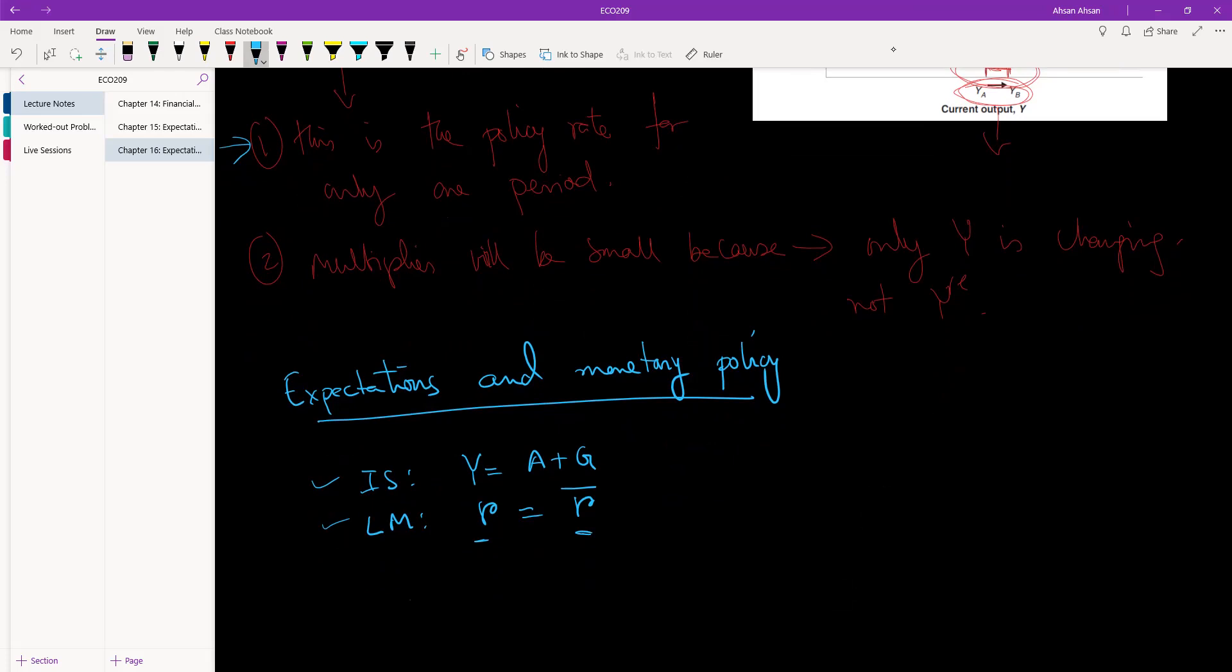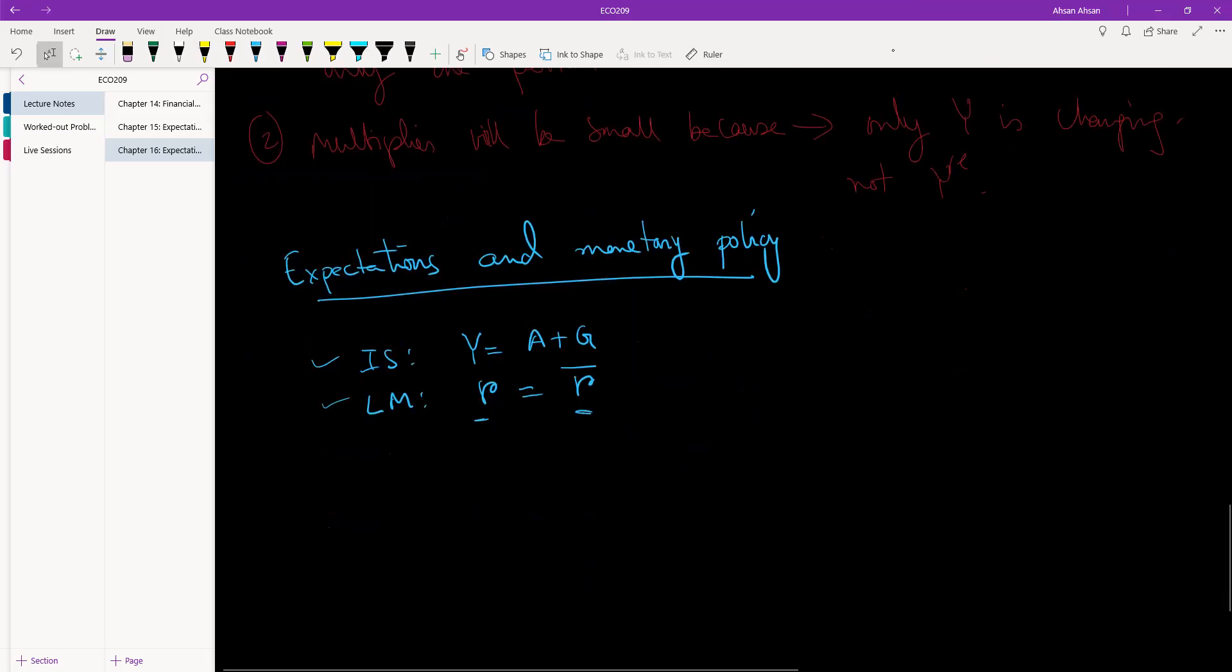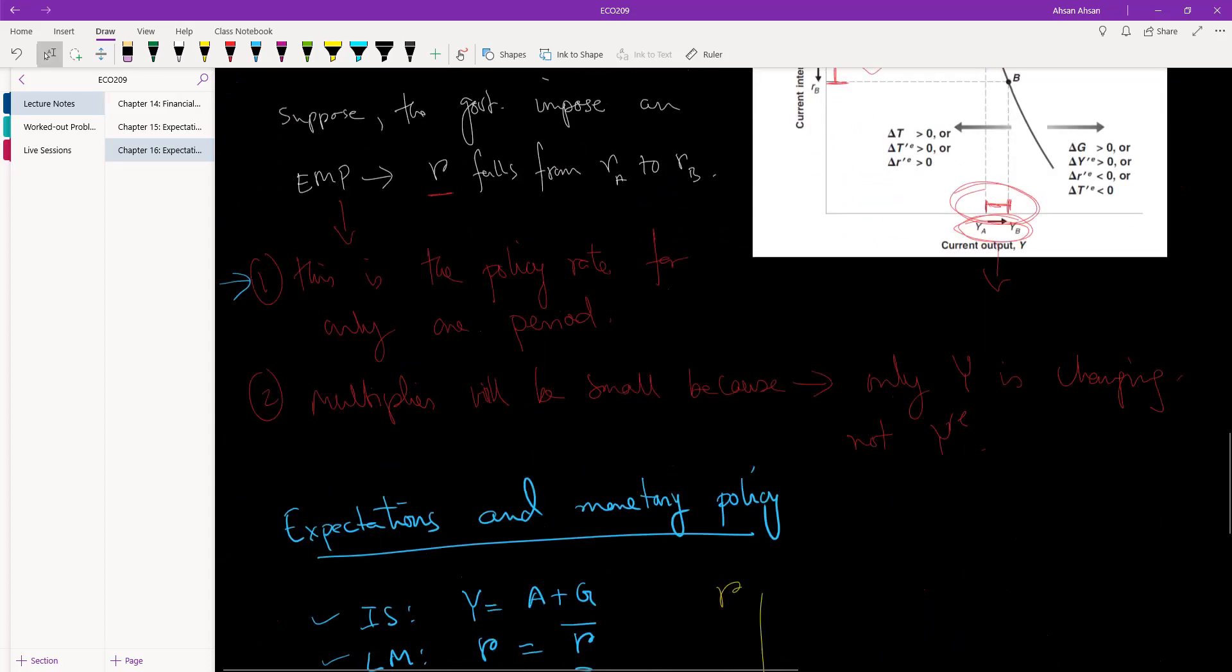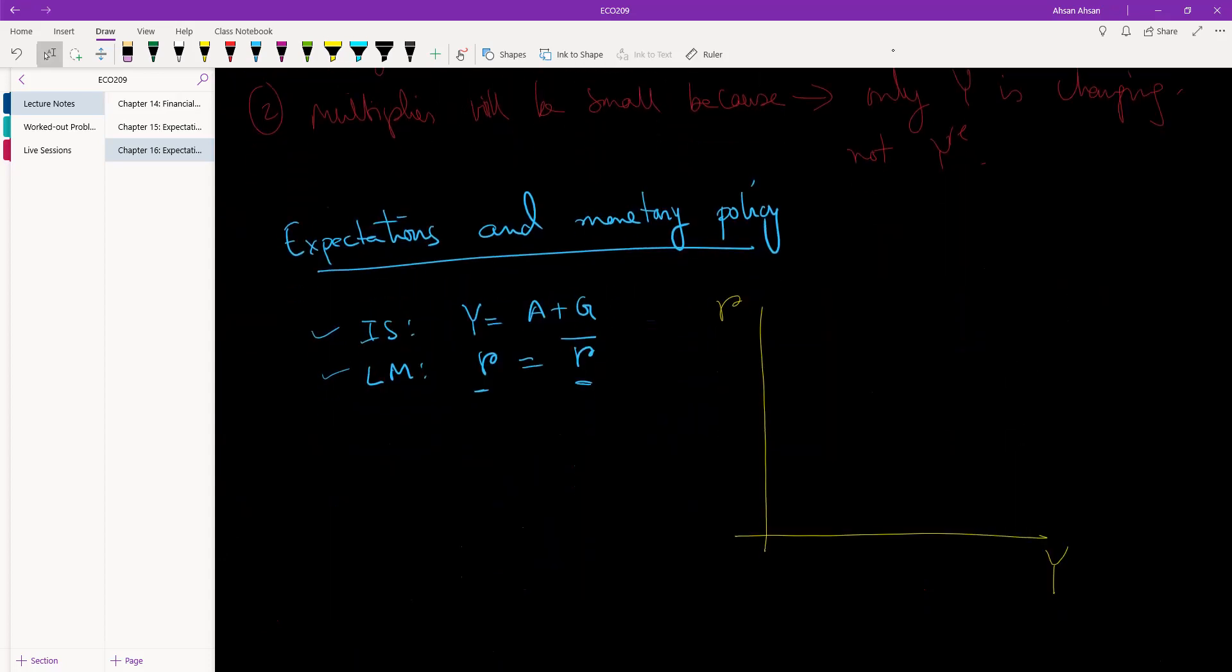So the LM curve is still just a straight line, a horizontal line. Let's draw that over here. We have Y or output, and over here we have R, which we'll call the current period interest rate or current interest rate. On the y-axis we have current interest rate.